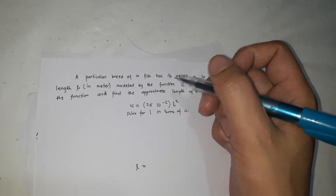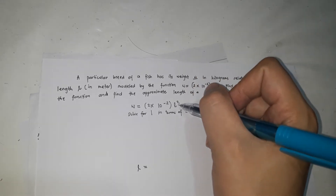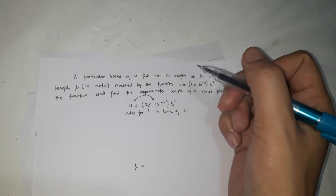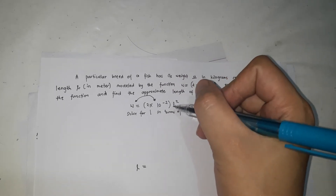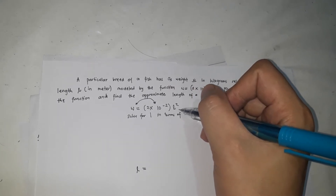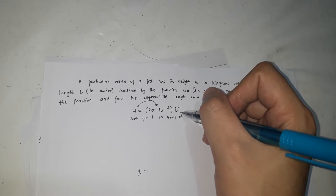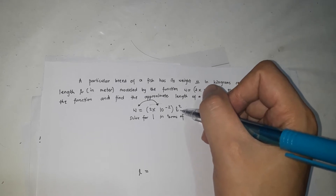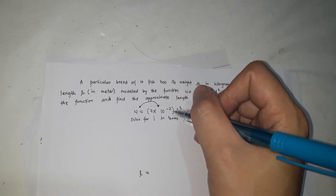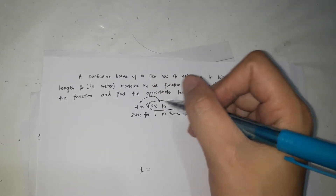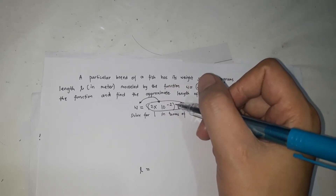To isolate l, we need to transpose terms. Because there's no plus or minus here — meaning they form a single term — if you move l to one side, you must also bring 2 × 10^(−2) along with it. When you transpose, the positive becomes negative, giving: −2 × 10^(−2) × l² = −w.